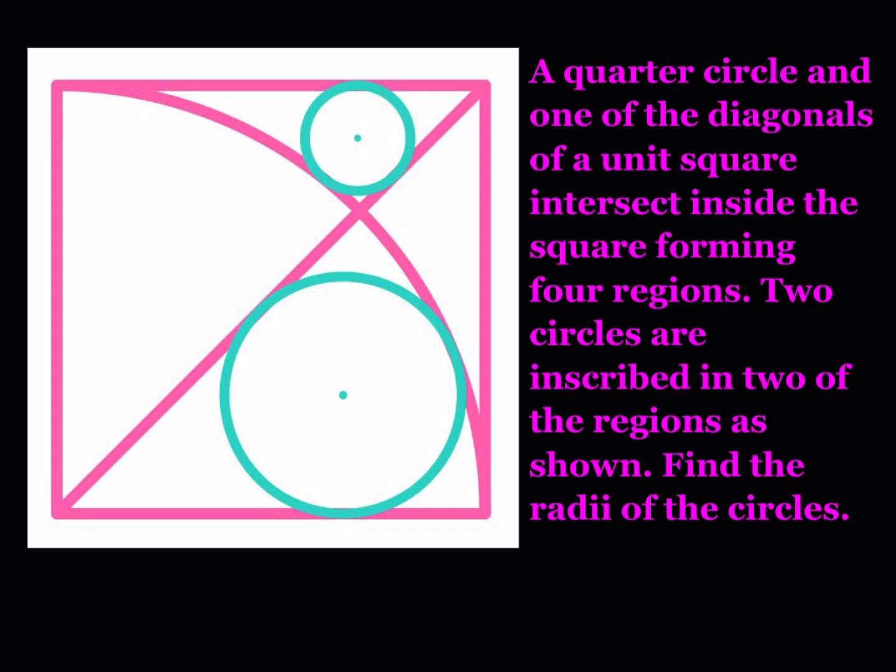A quarter circle and one of the diagonals of a unit square intersect inside the square forming four regions. Two circles are inscribed in two of the regions as shown. Find the radii of the circles.